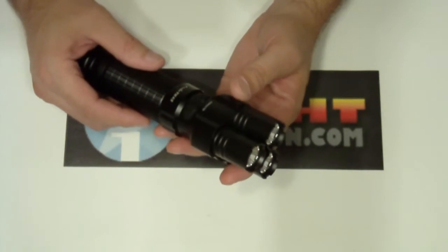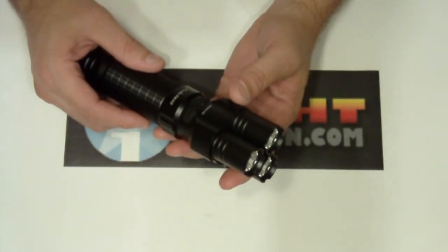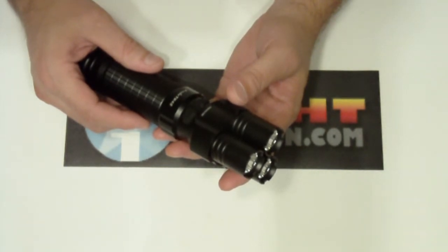It's got three Cree XPG LED R5s. It's got turbo of 760 lumens, low of 8 lumens, mid 95, and high of 312.